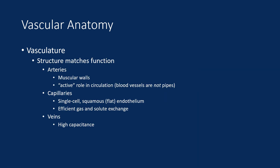In all of biology, structure matches function. Arteries have relatively muscular walls because they play an active role in circulation. Blood vessels are not pipes — that analogy is too simple. Blood vessels are dynamic and have an active role in controlling the dynamics of circulation.